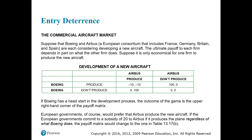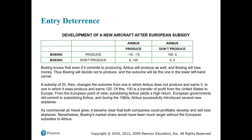This might prevent firms in other countries from entering the world market so that the domestic industry can enjoy high prices and greater sales. Here is an example of entry deterrence by Boeing and Airbus. Suppose Boeing and Airbus — a European consortium including France, Germany, Britain, and Spain — are each considering developing a new aircraft. The ultimate payoff depends in part on what the other firm does. If it is only economical for one firm to produce the new aircraft, and Boeing has a head start, the outcome is the upper right corner of the payoff matrix.